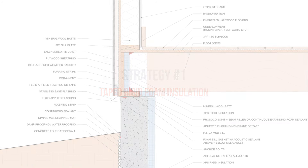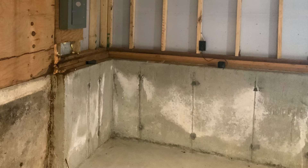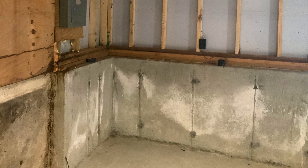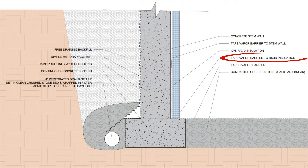For this strategy we can use XPS, EPS, GPS, or polyisocyanurate, as all these insulation types provide the benefits of a vapor retarder to prevent condensation on the concrete stem walls, and taping the joints provides the benefits of an air barrier. We still have to prevent condensation from forming on the cold stem walls from the warm, moisture-laden interior air, as we would for a typical basement. The rigid insulation should be taped to the vapor barrier on the floor of the crawl space to prevent air leakage that could result in liquid water from condensation, as air can deposit moisture at a rate orders of magnitude higher than diffusion.